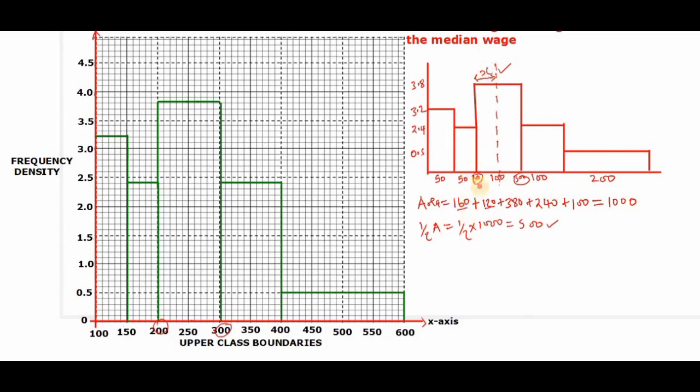And then we already know that the position here is 200. So for us to know the median, we will simply have to add x plus 200 to give us the median of the data.